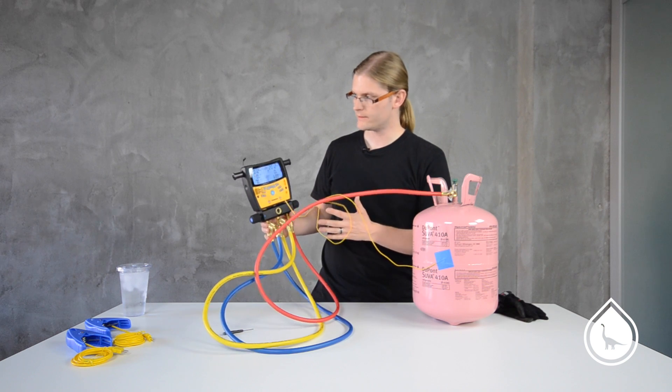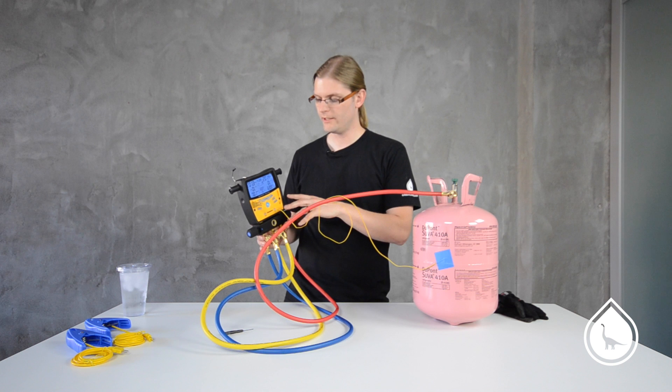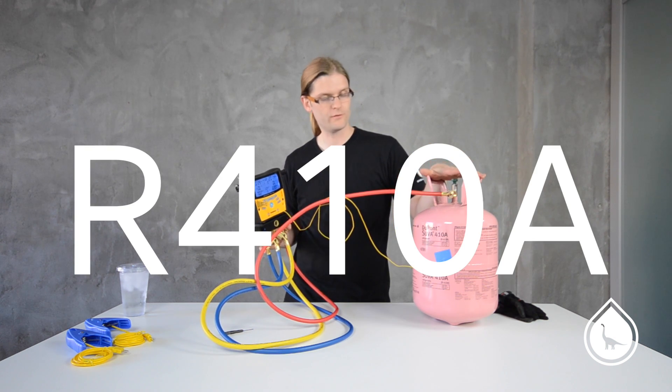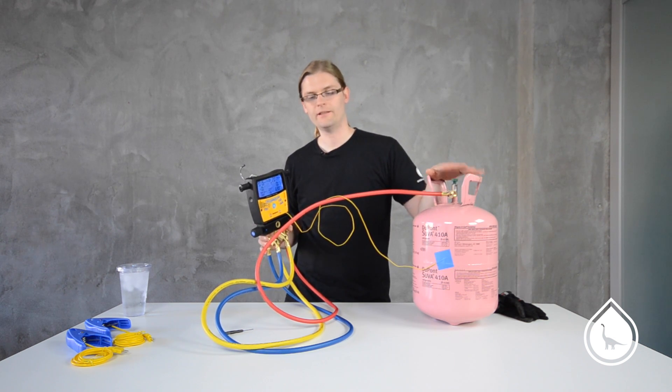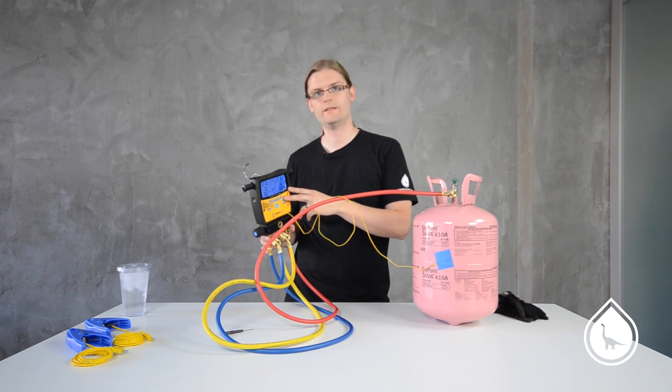When it runs this test, it's taking your measured pressure and your measured temperature and comparing it to a pressure temperature chart for R410A. If it gets too far off of what the chart should be saying, then it's going to tell you it's out of calibration.